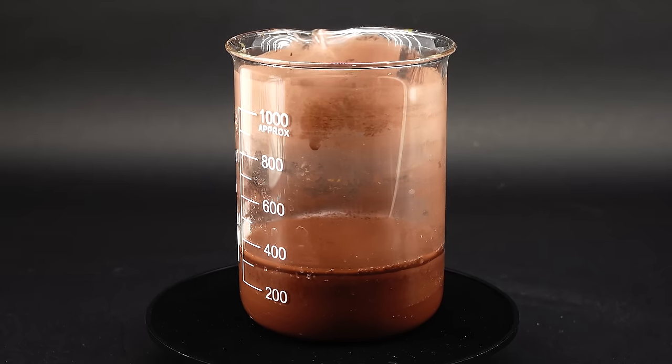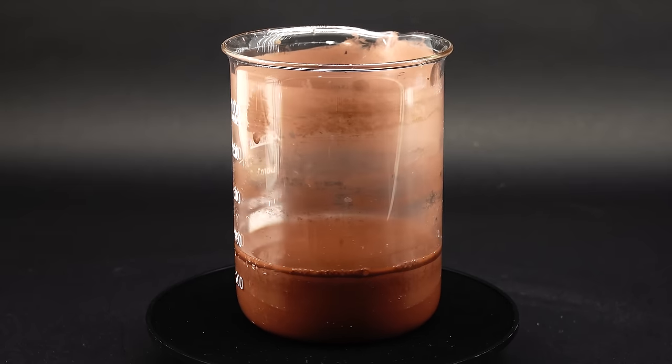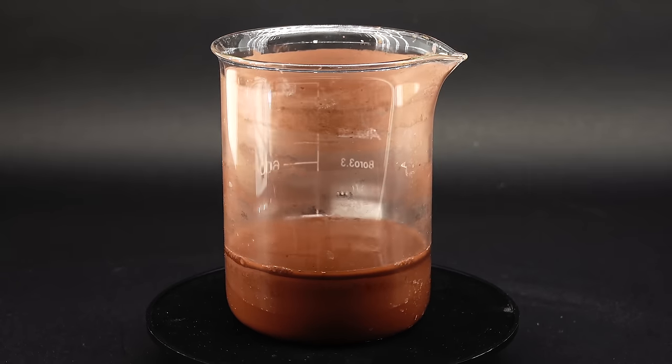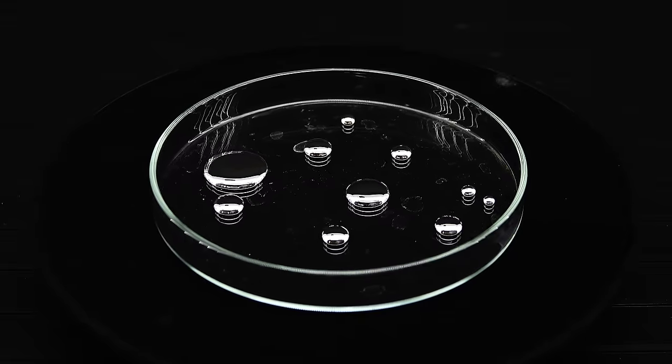Anyway, now with the powder ready, I can finally start making the amalgam. To do that, I will just have to combine my beautiful copper powder with some mercury, which on paper doesn't sound all too hard.